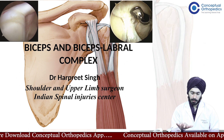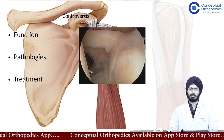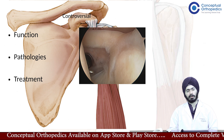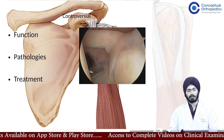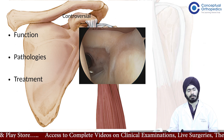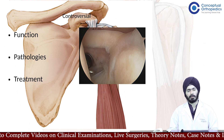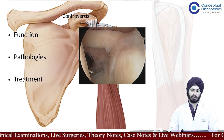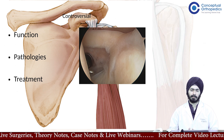What is controversial about biceps? Almost all things about the long head of biceps are controversial — its main function, what does the long head of biceps do, what is its main role in the shoulder, the various pathologies, how do they present, how do we diagnose them, and how do we treat them. We will try to remove that controversy and simplify things about biceps.